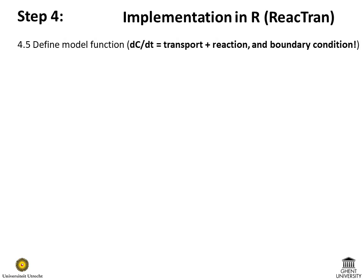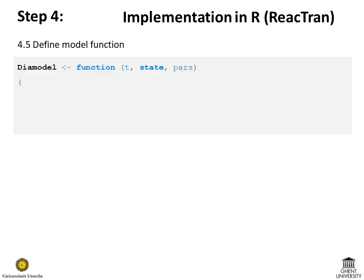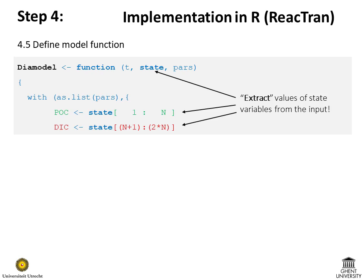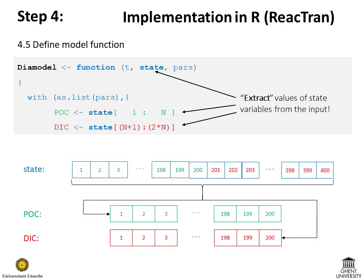Now we are ready to define the model function, which calculates the time derivatives of the state variables depending on the rates of reactions and transport, and where boundary conditions are implemented. This function has three input parameters: time, one long vector with the values of the state variables, and the vector with model parameters. The first step in the model function involves extracting the individual state variables from that one long vector — the first 200 values correspond to POC concentrations and the second 200 to DIC concentrations.